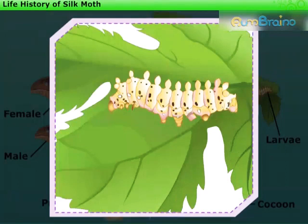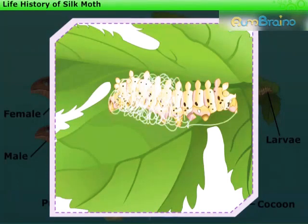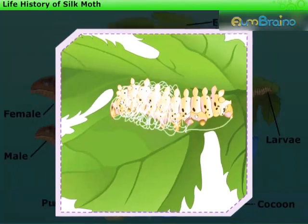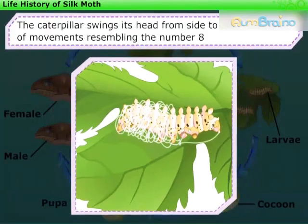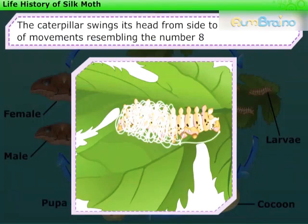Before the caterpillar enters the next stage of its life history, that is the pupa stage, it weaves a net to hold itself. While doing so, it swings its head from side to side in a series of movements resembling the number 8. During these movements, the caterpillar secretes a protein fiber which hardens on exposure to air and becomes silk fiber.